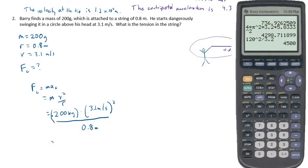So let's pull our giant calculator up beside Barry here. 0.200, which is not necessary to write that in there, 0.2 times 3.1 squared divided by 0.8 should give us 2.4025.